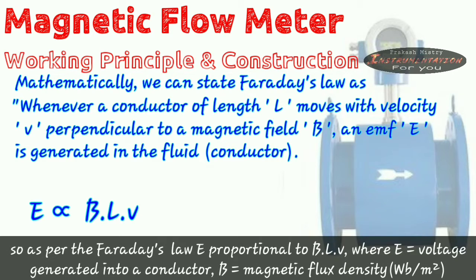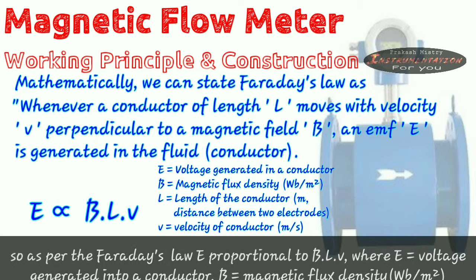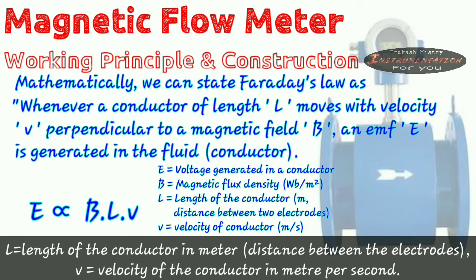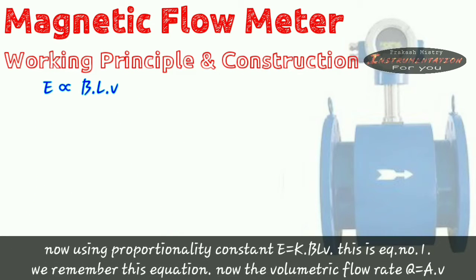So as per Faraday's law, E proportional to BLV. Where E is equal to voltage generated in the conductor. B is equal to magnetic flux density in Weber per meter square. L is equal to length of the conductor in meter, distance between the electrodes. V is equal to velocity of the conductor in meter per second. Now using proportionality constant, E is equal to K into BLV. This is equation number one. We remember this equation.